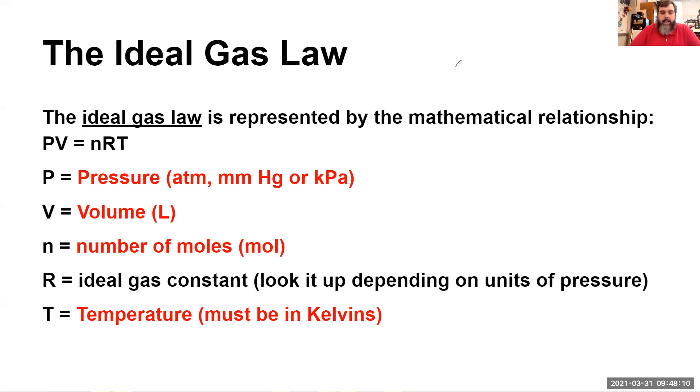The number of moles is n. And then R is the ideal gas constant. And you need to look it up. This is actually, if you're taking chemistry here in North Carolina, on the very front of your reference tables, there's the gas constants, and there's a list of them.